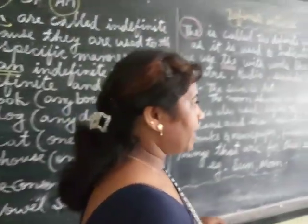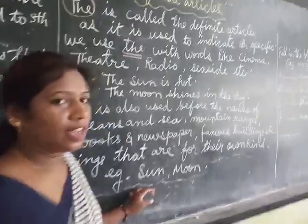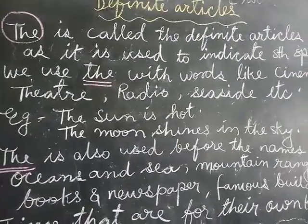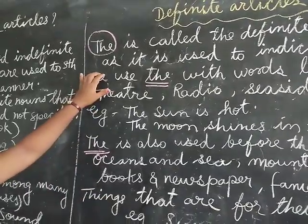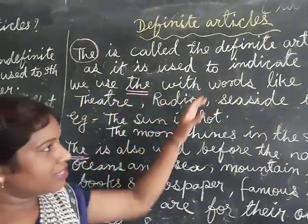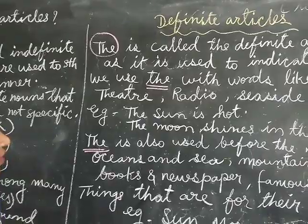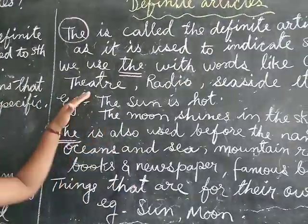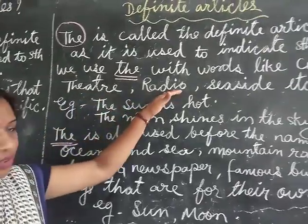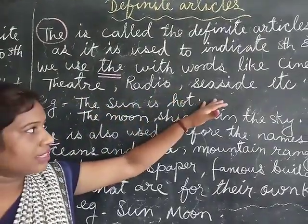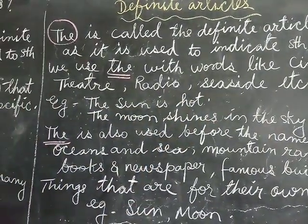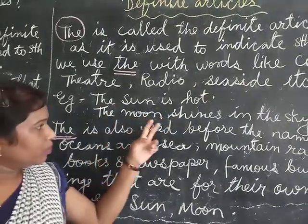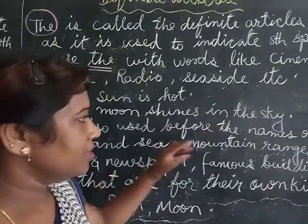Now I will explain about the definite article. 'The' is called the definite article, as it is used to indicate something specific. We use 'the' with words like cinema, theater, radio, seaside, etc. For example, 'the sun is hot,' 'the moon shines in the sky.'